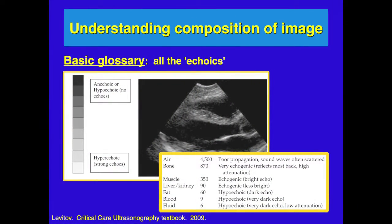Hypoechoic is generally dark, or anechoic is black, and is associated with things like fluid, blood, or fat. Hyperechoic structures are bright white and generally occur with bone or pericardium. Air does not propagate ultrasound well — the waves are often scattered, and it does not show up as black; it actually doesn't show up well at all.